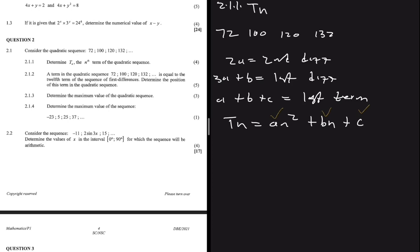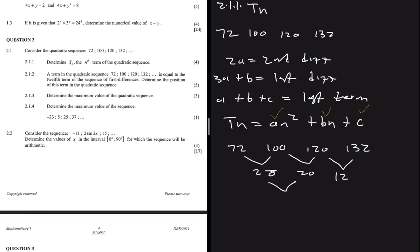Starting with the sequence 72, 100, 120, 132: subtracting 72 from 100 gives 28, 100 from 120 gives 20, and 120 from 132 gives 12. These are the first differences. Subtracting 20 from 28 gives minus 8, and subtracting 12 from 20 also gives minus 8, confirming a constant second difference of minus 8.